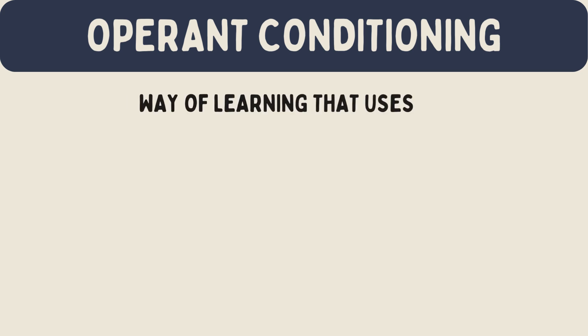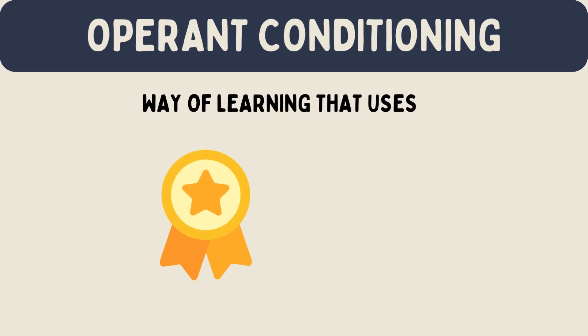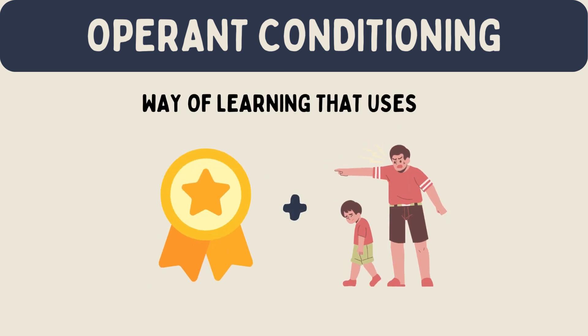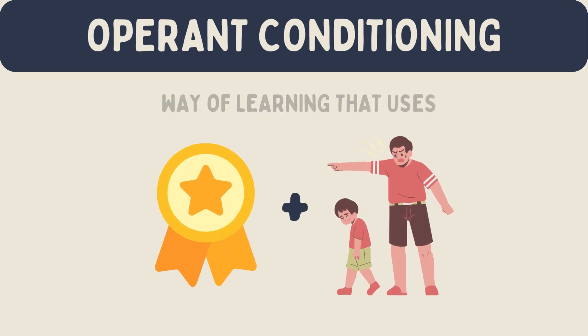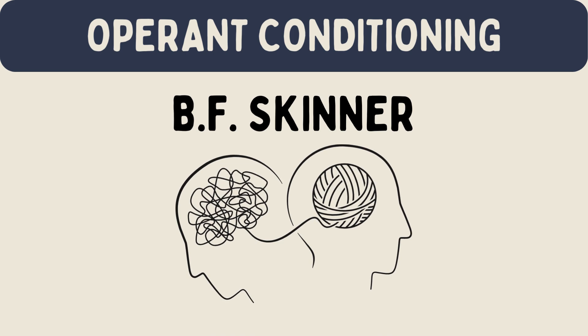Operant conditioning is a way of learning that uses rewards and punishments to shape behavior. B.F. Skinner, a famous psychologist, developed this idea in the 1930s. This method helps us understand why people and animals behave in certain ways.